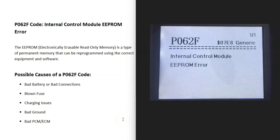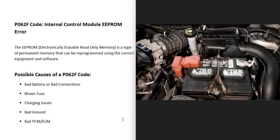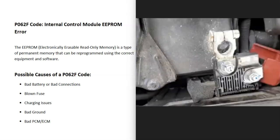And so what are some possible causes of a P062F code? Well, the first thing that can cause this and a very common cause is going to be a bad battery or bad battery connections. All these computer modules need a good, stable power supply or else it's going to cause issues with them. They'll throw out different types of errors if they're not getting a stable power supply. And so for this reason, go check out the battery.